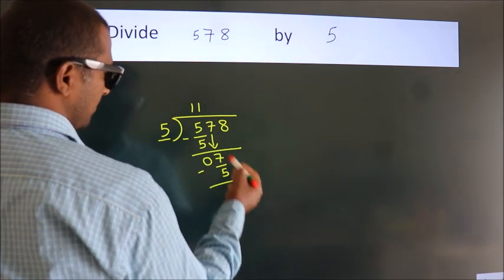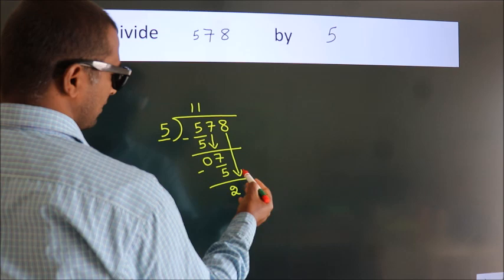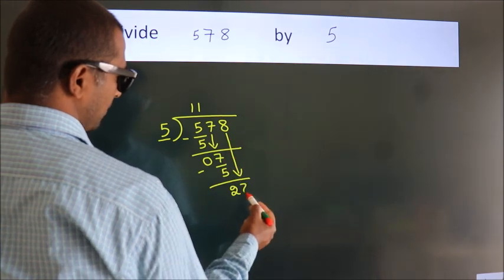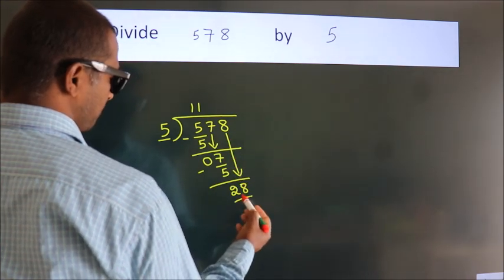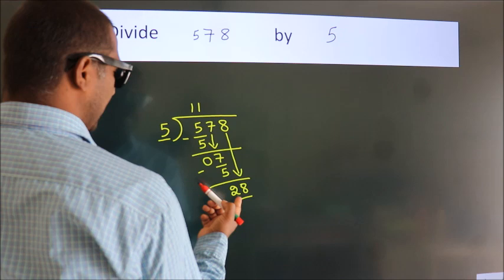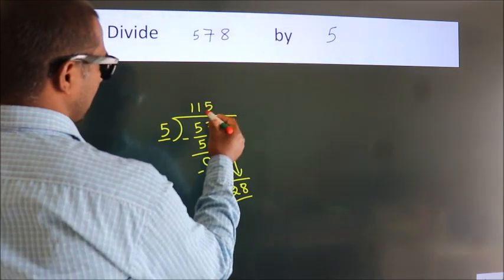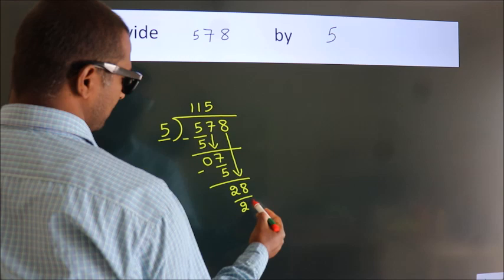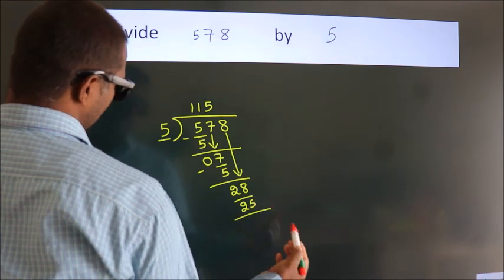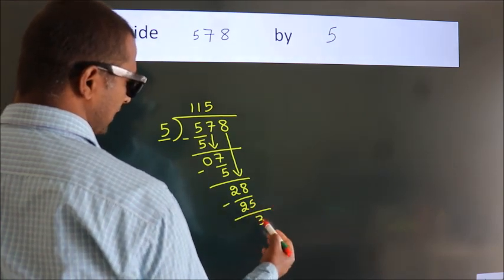After this, bring down the beside number, so 8 down, so 28. A number close to 28 in 5 table is 5 fives 25. Now we subtract, we get 3.